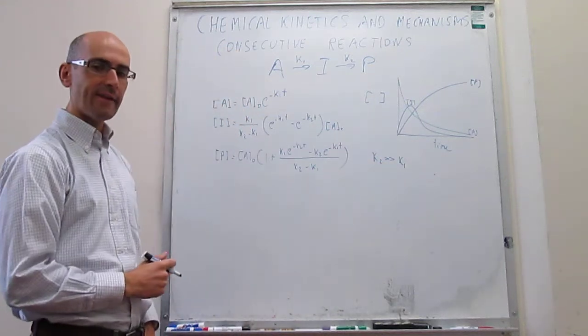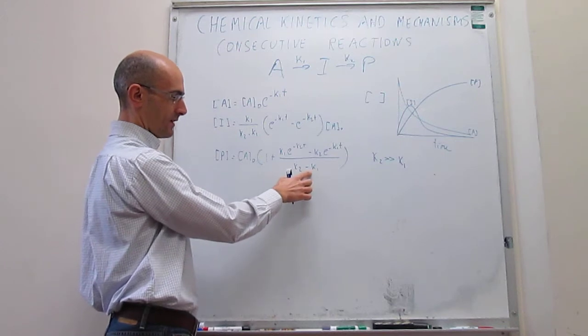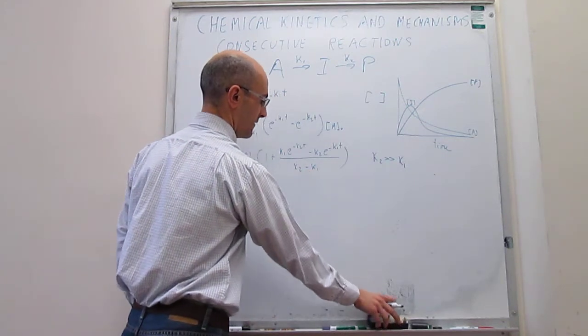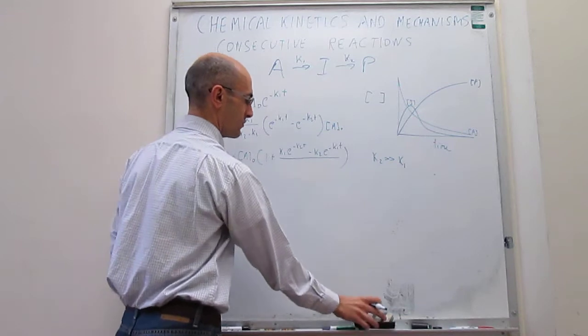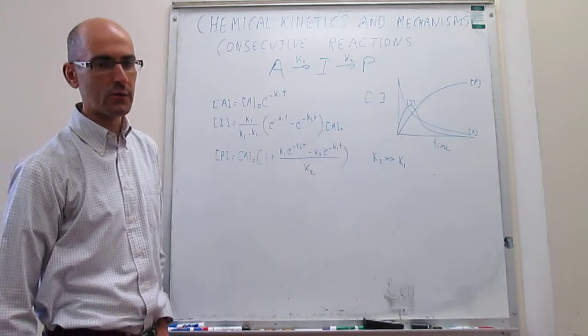Well, we can see here that in the denominator, what you're going to have is that this number is much greater than that. So you can approximate that by just the following. This is going to be equal to simply K2, because you can neglect K1 with respect to K2.